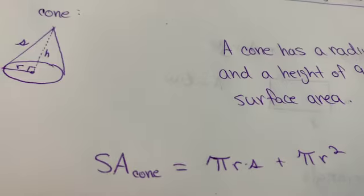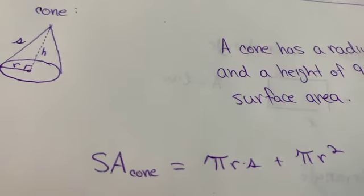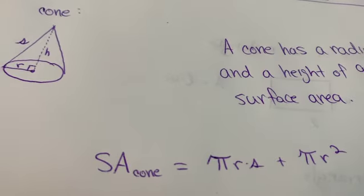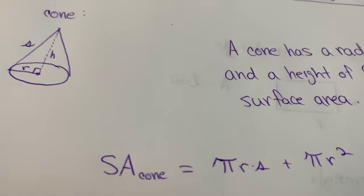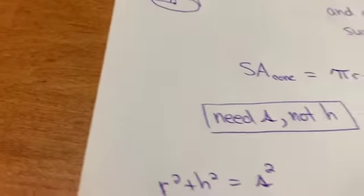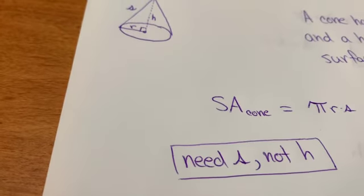And notice it's s, not h. So they gave us h, which is height, but we actually want slant height. So as we did in a previous example, we're actually going to have to take a second to find s given the information we had.